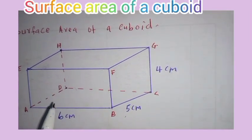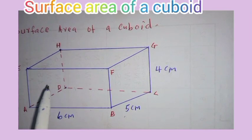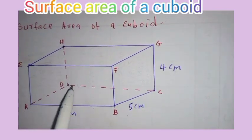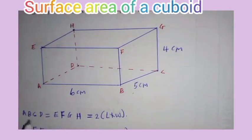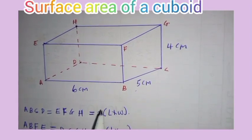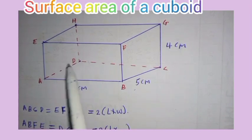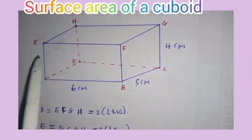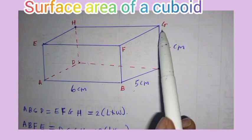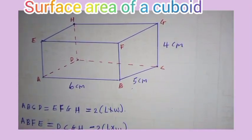Two of the faces are equal. Generally, the front face is equal to the back face. For instance, face ABCD is the same as face EFGH. So those two faces are equal.